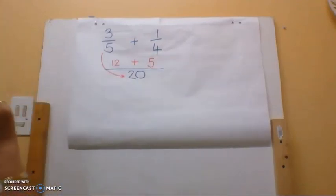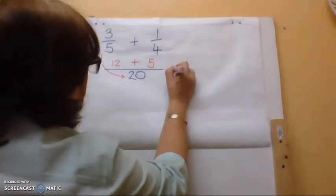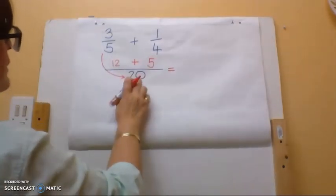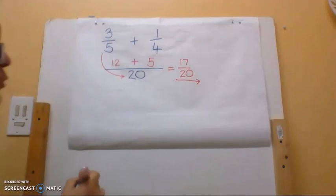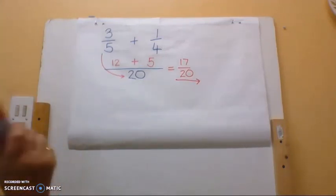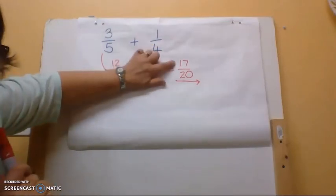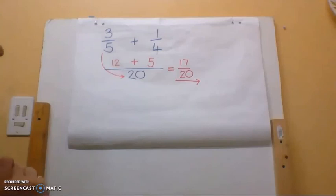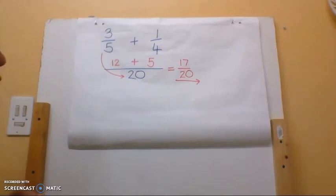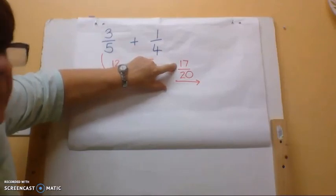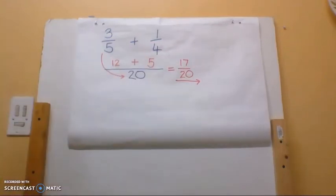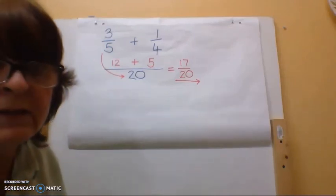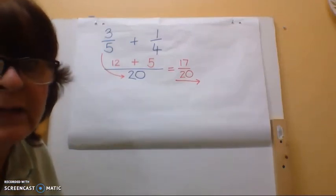Four will go into 20 five times; five times 1 is 5, so 1 quarter is also 5 twentieths. Now I add my numerators: 12 twentieths plus 5 twentieths gives me 17 over 20. Is it in its simplest form? Yes — there is no number besides one that can divide equally into both 17 and 20, because 17 is a prime number, which has only got one and itself as its factors. I hope you girls understand. I will send out a few more videos later. Have a good day, goodbye.